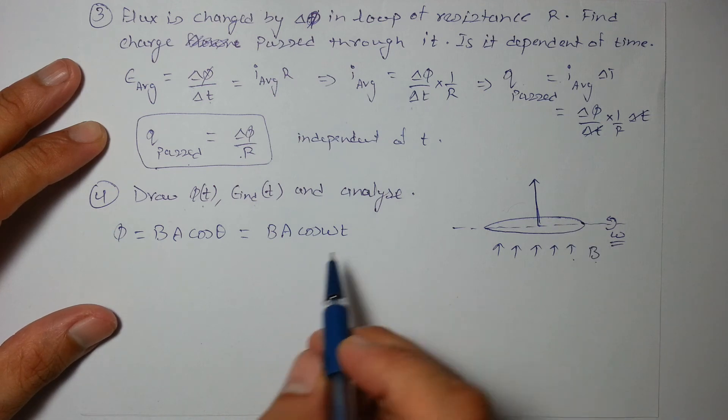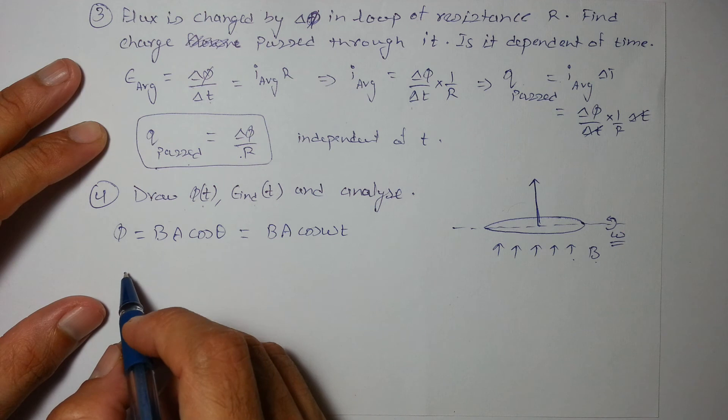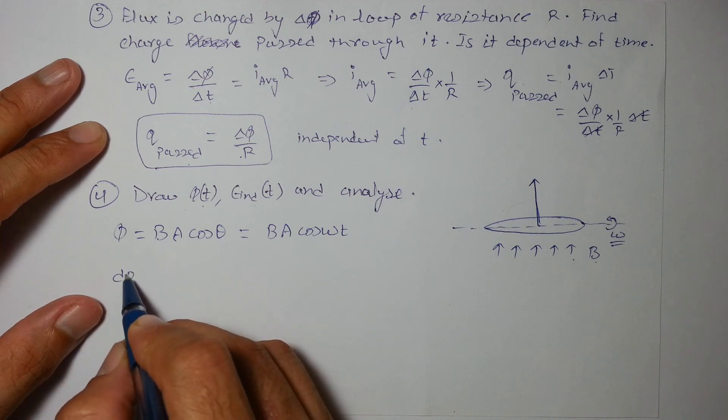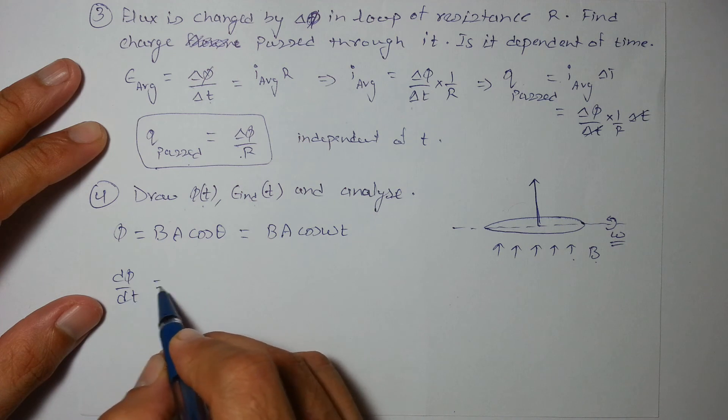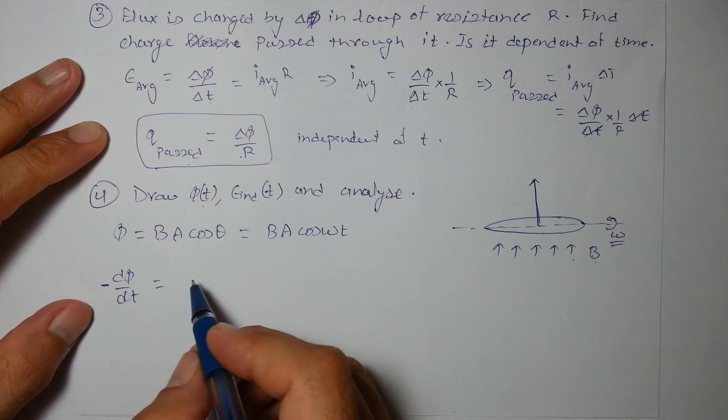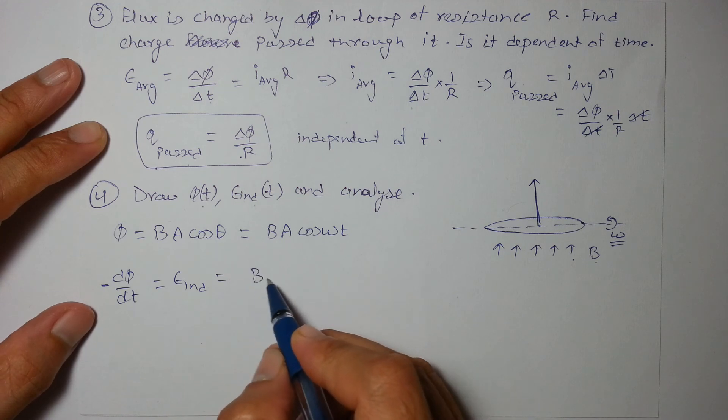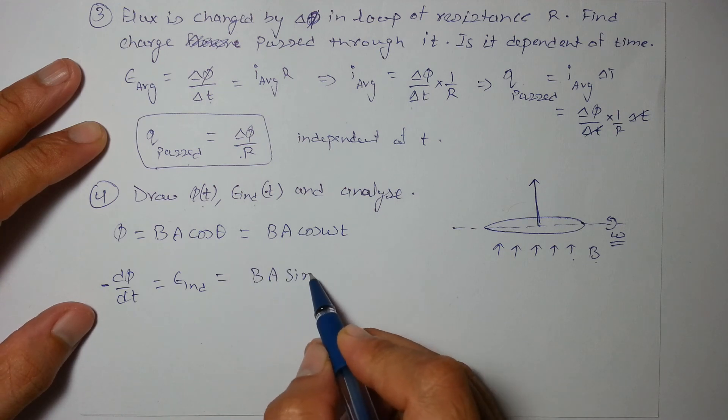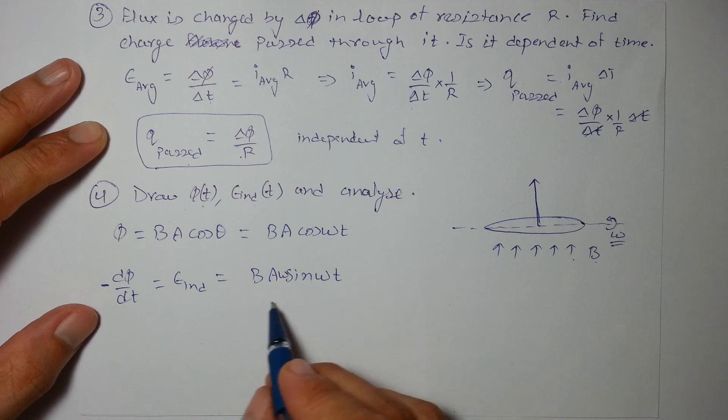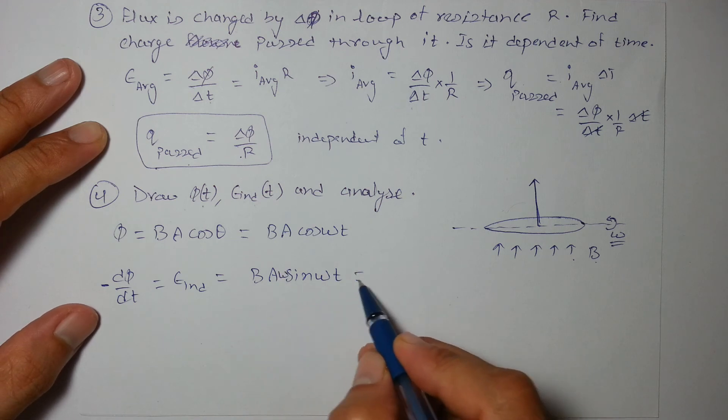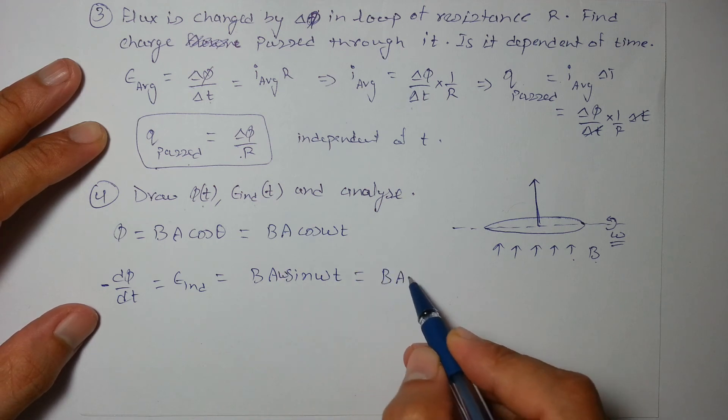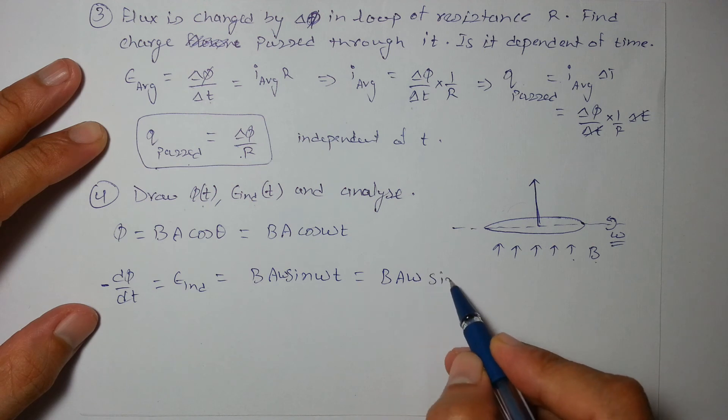So it will be BA cos omega t and by differentiating it d phi by dt we get the minus sign to get EMF induced. The answer will be BA sin omega t into omega.